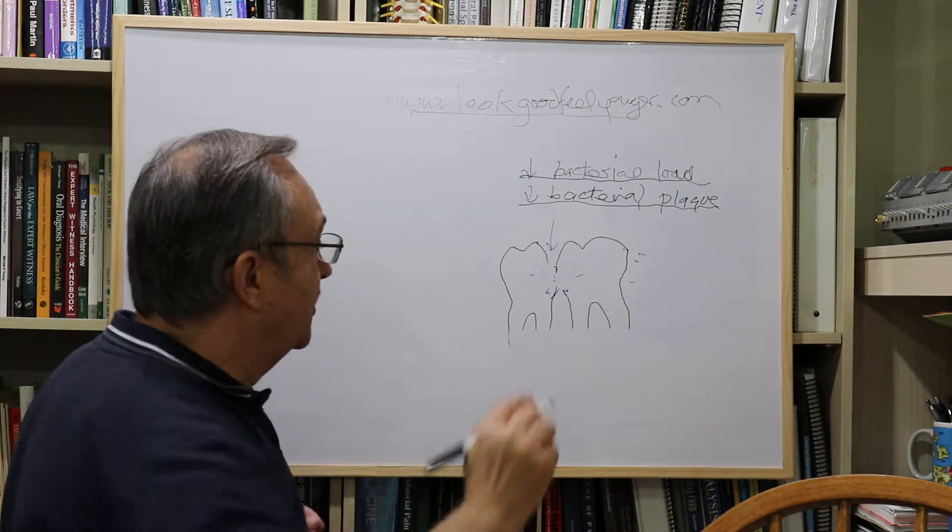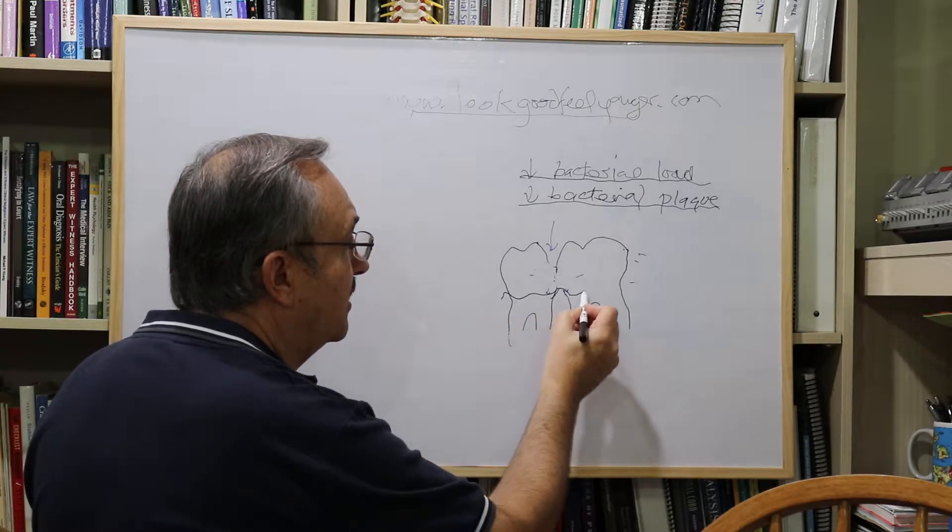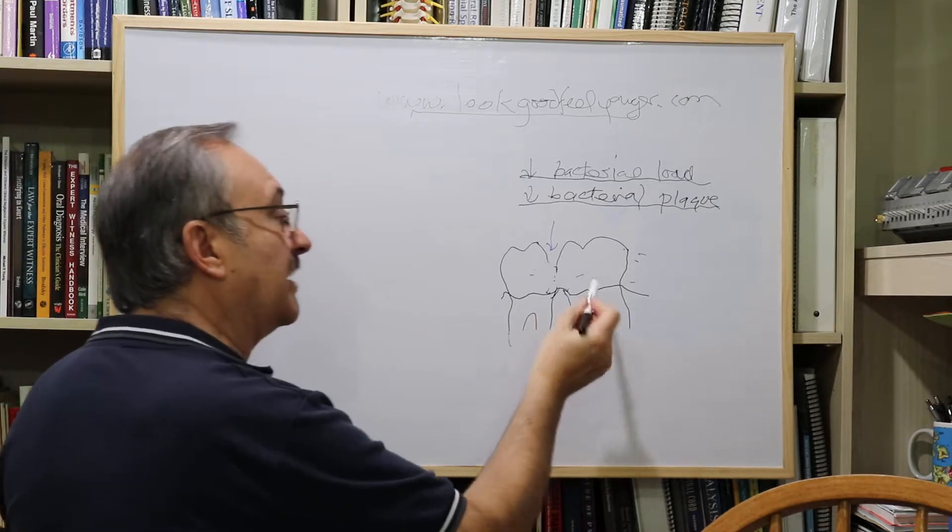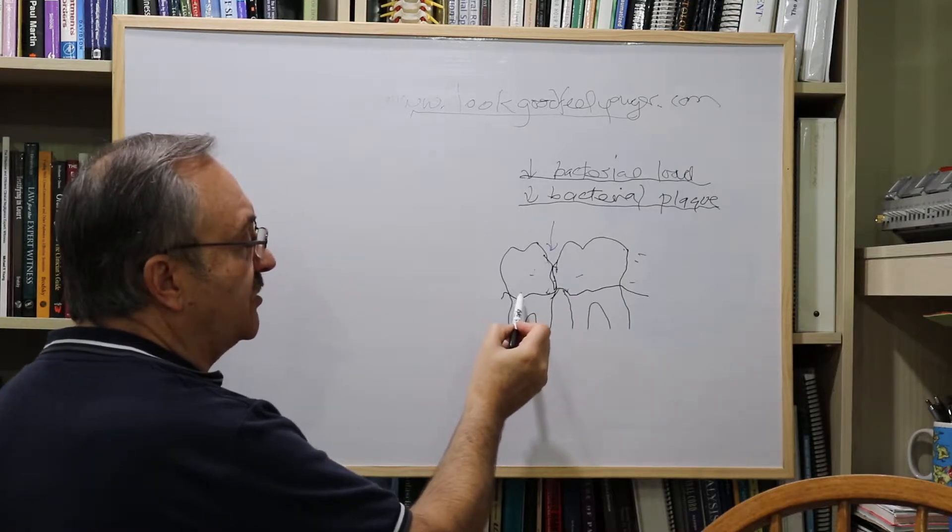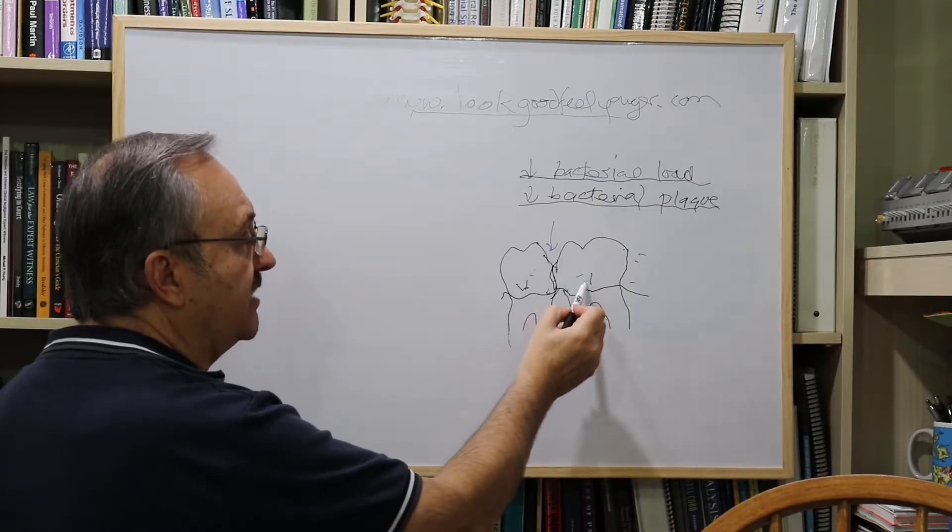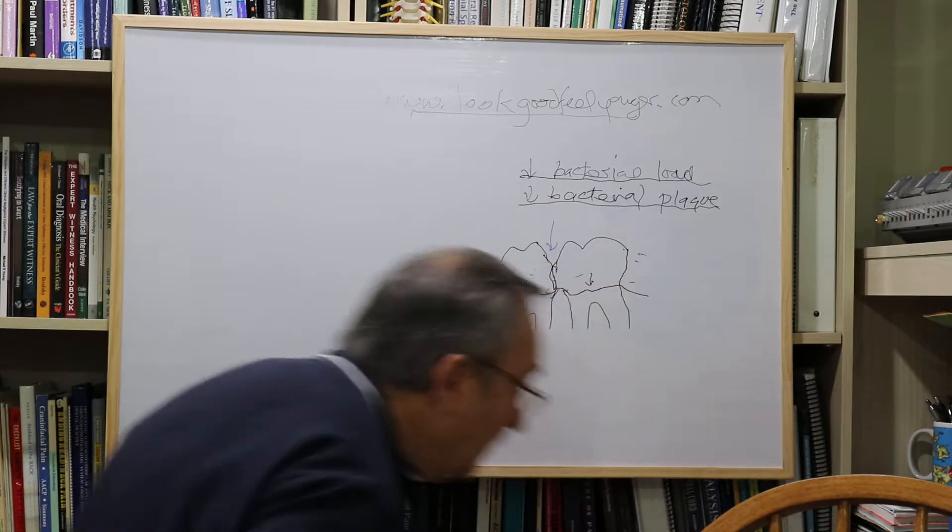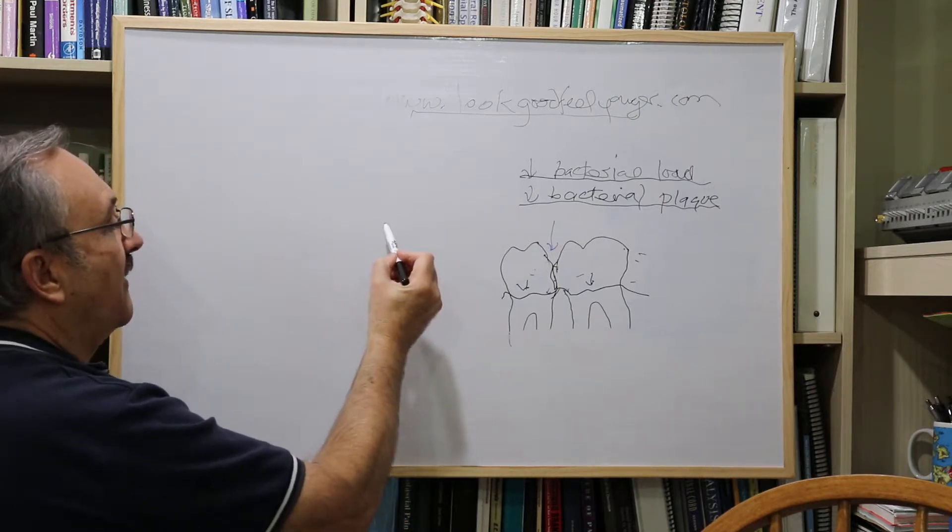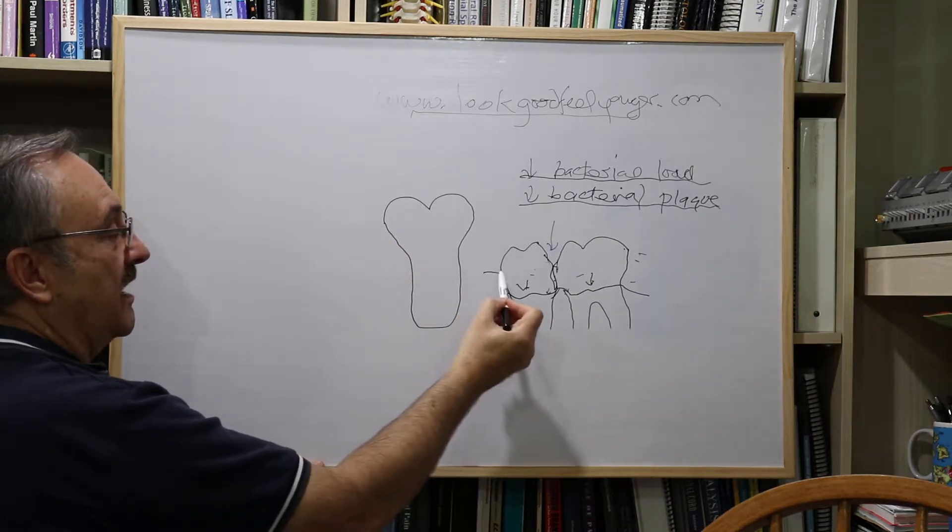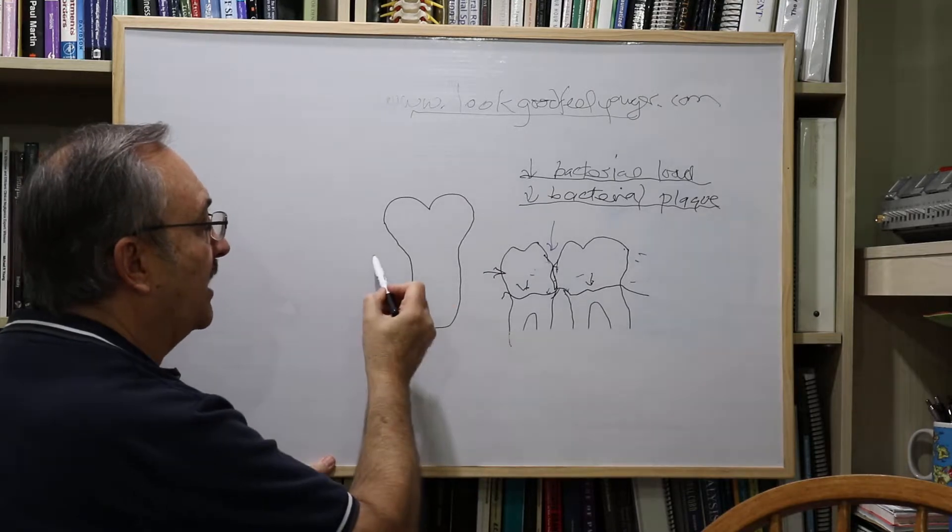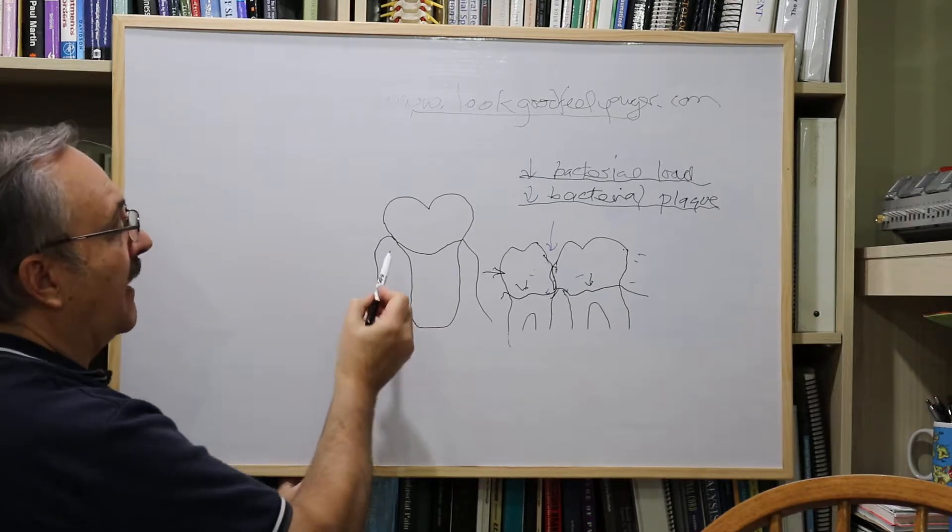So here we go back to this diagram here. So what you want to do is to remove the plaque. So here we have, and this is the tooth from here, from the neighbor's viewpoint, and we said that the gum comes up and it goes down and it comes up, and that's sort of the way it is.